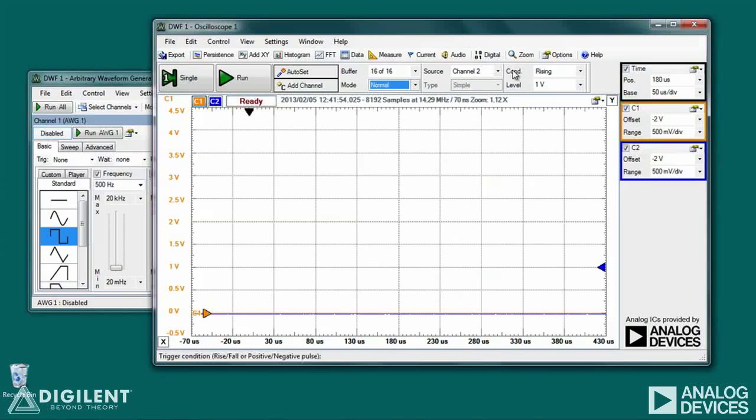Now on my oscilloscope, I've used a time base of 50 microseconds per division on the time, and my vertical scales on both channel 1 and channel 2 are set to 500 millivolts per division. I'm going to trigger my acquisition off of the square wave on the input. So I've selected my source as channel 2. I'm using a rising edge trigger at a level of 1 volt.